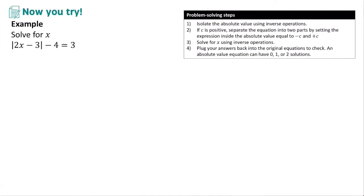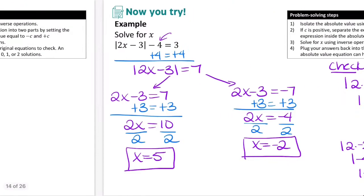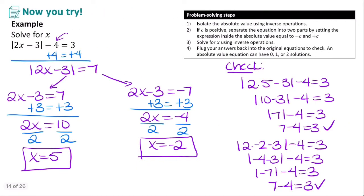Pause the video and try this example on your own. In this problem, we start by adding 4 to both sides to isolate the absolute value, then separate into 2x minus 3 = 7 and 2x minus 3 = negative 7. That gives solutions x = 5 and x = negative 2, and both solutions check out in the original equation.